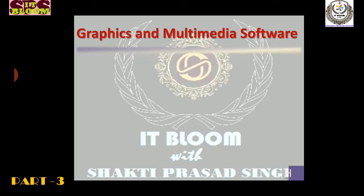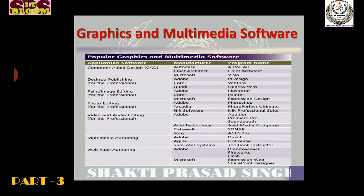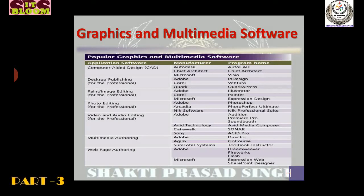Here come the graphics and multimedia software. In the graphics and multimedia software, people are using software for graphics effects related with graphical tasks, as well as multimedia — that is audio, video, and text. Some popular graphics and multimedia software examples I have given here with their manufacturer name, program name, and application name. Computer aided designing — CAD — manufacturer is Autodesk and the program name is AutoCAD.